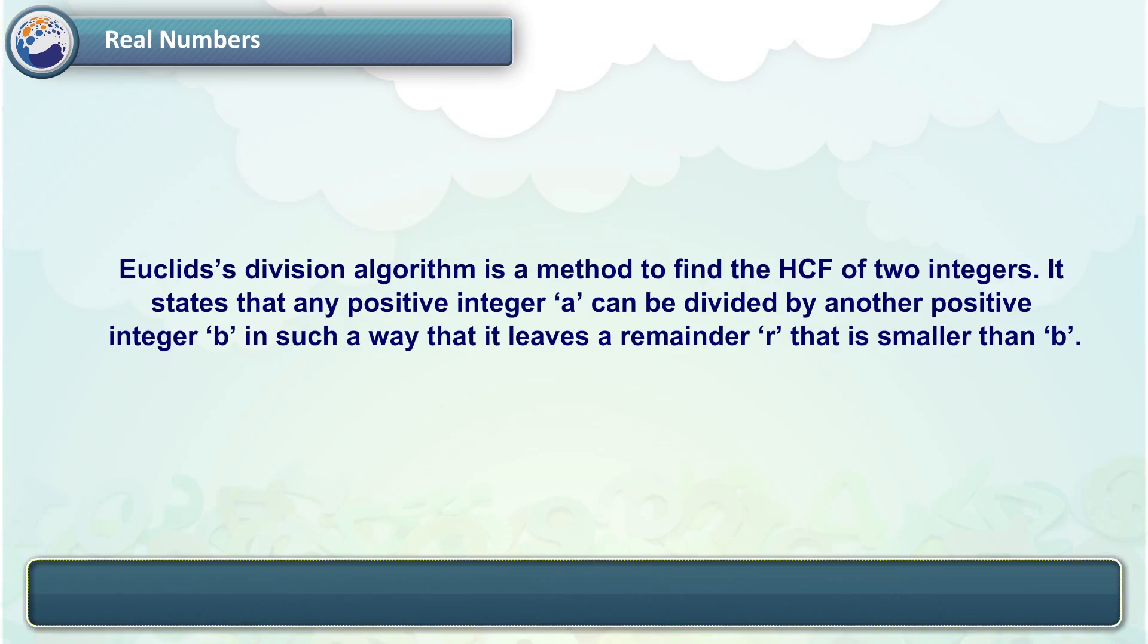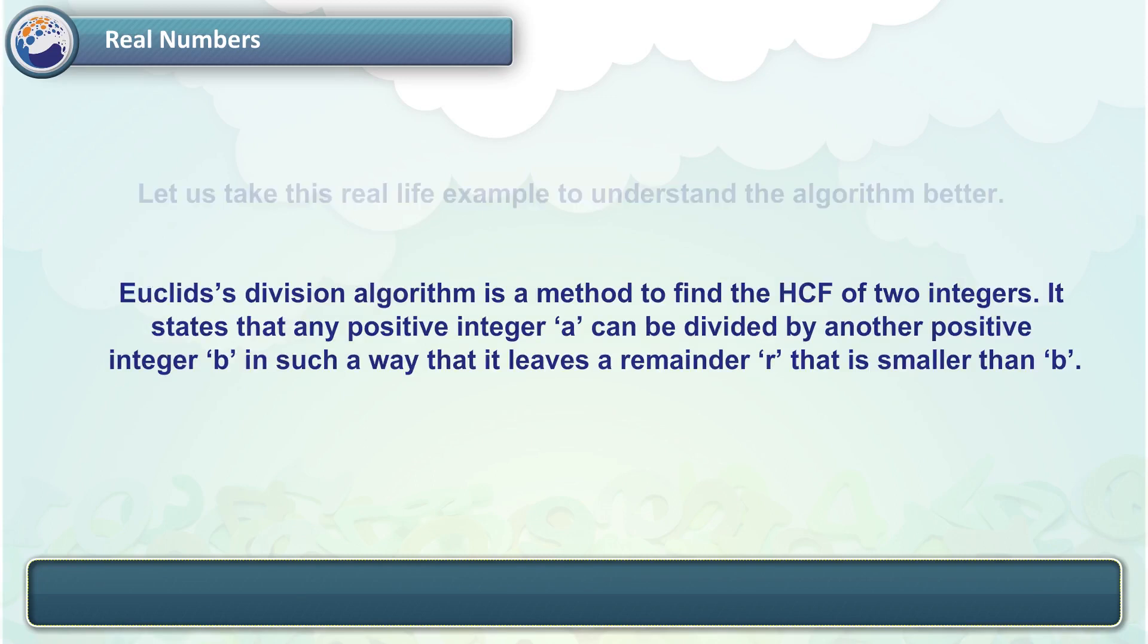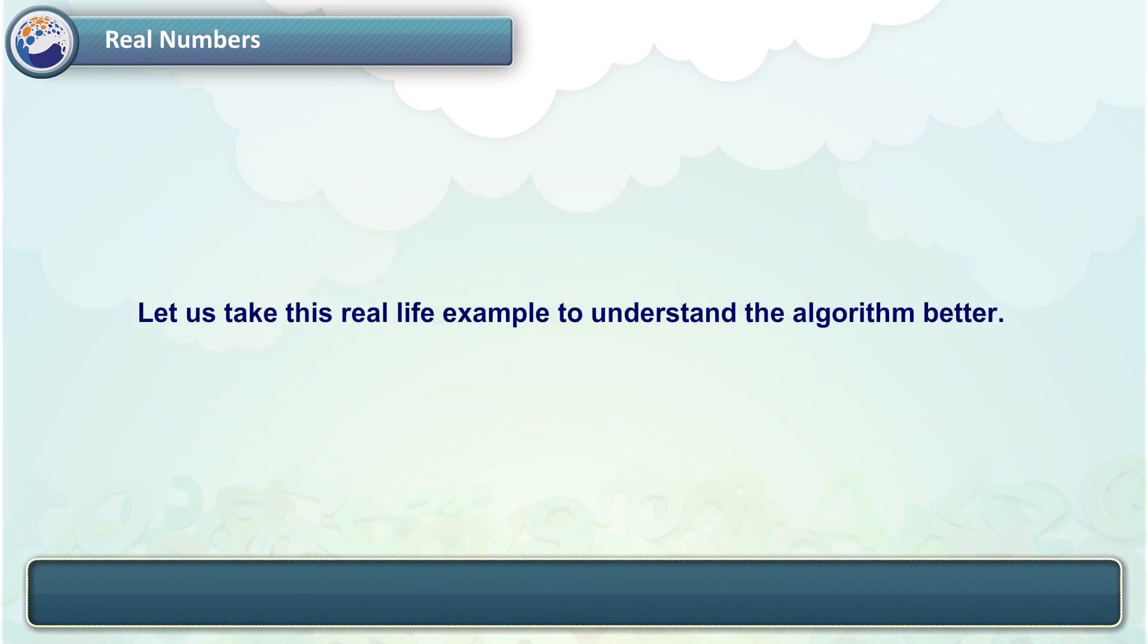Euclid's division algorithm is a method to find the HCF of two integers. It states that any positive integer A can be divided by another positive integer B in such a way that it leaves a remainder R that is smaller than B. Let us take this real-life example to understand the algorithm better.